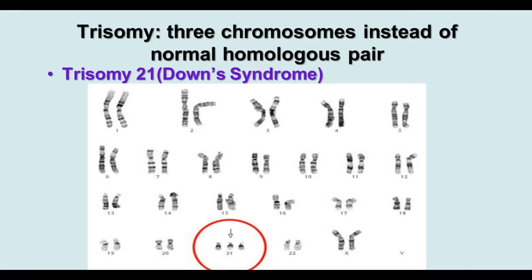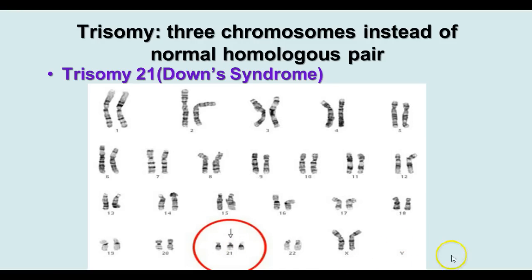When you're born with three copies of a chromosome instead of two, this is called trisomy. Trisomy 21, also known as Down syndrome, means you have three copies of chromosome number 21. There are several different trisomies that occur, and if you line up the chromosomes from largest to smallest in a karyotype, you can see the extra chromosome 21.